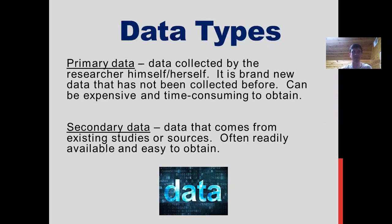Especially if that means sending out surveys and then waiting for results to occur. Secondary data is data that currently already exists from other experiments or other data types. That can be beneficial in the fact that it's easy to obtain — you just have to go and find the research similar to what you're looking for. But on the other hand, it might not be exactly what you're looking for in terms of the different metrics you want to measure.